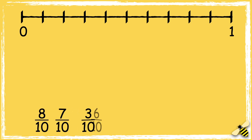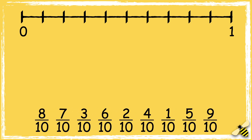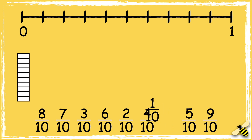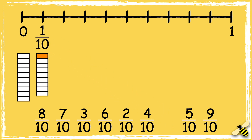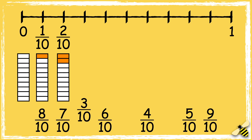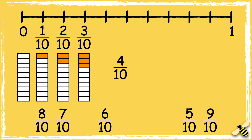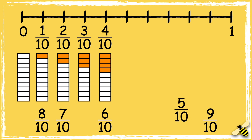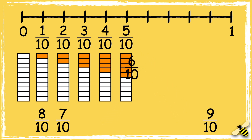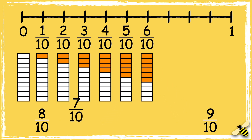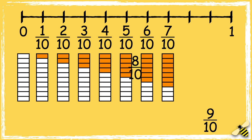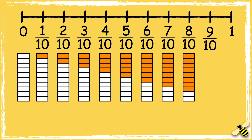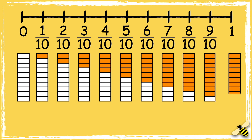Let's have a look at one more example. This number line is going up in tenths. Let's put these fractions in order from smallest to largest. So we start with 0, or 0 tenths: 1 tenth, 2 tenths, 3 tenths, 4 tenths, 5 tenths, 6 tenths, 7 tenths, 8 tenths, 9 tenths, and 10 tenths, or 1 whole.